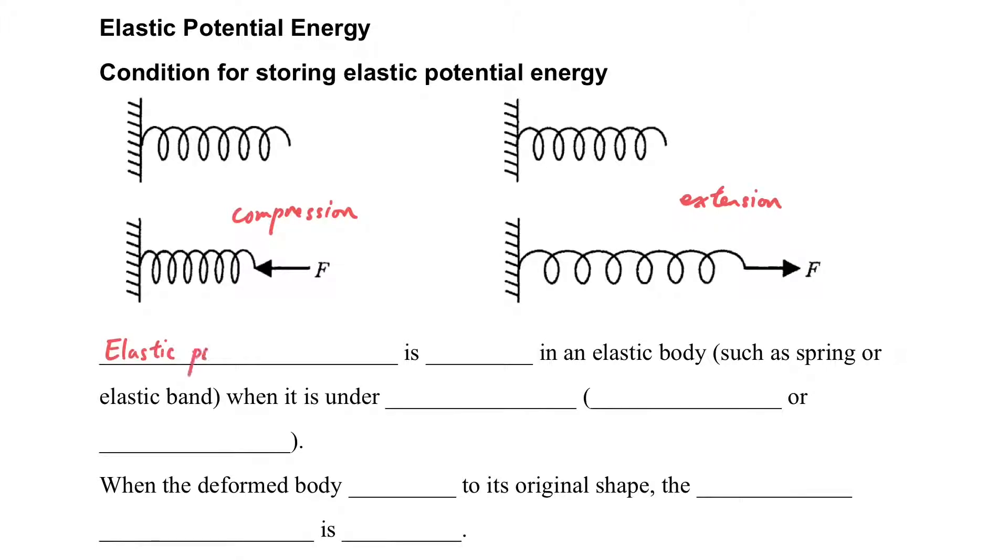Usually, it occurs in springs in our daily life. Elastic Potential Energy is stored in an elastic body, such as a spring or elastic band, when it is under deformation - that means compression or extension.